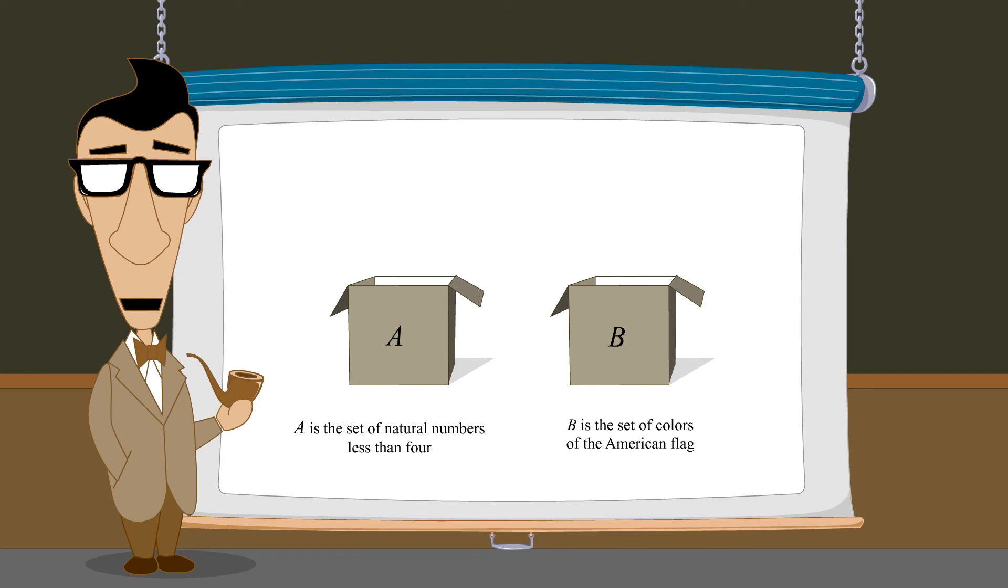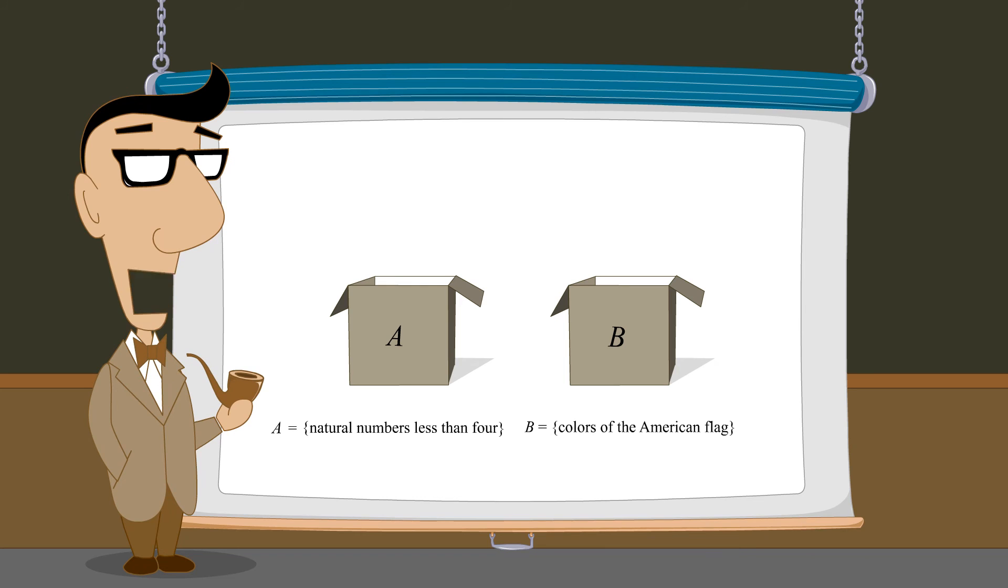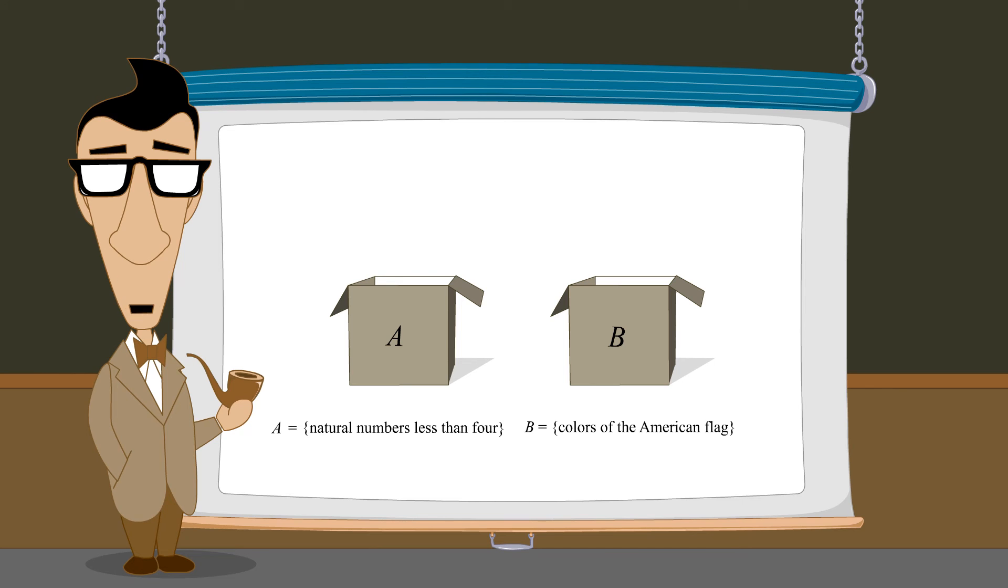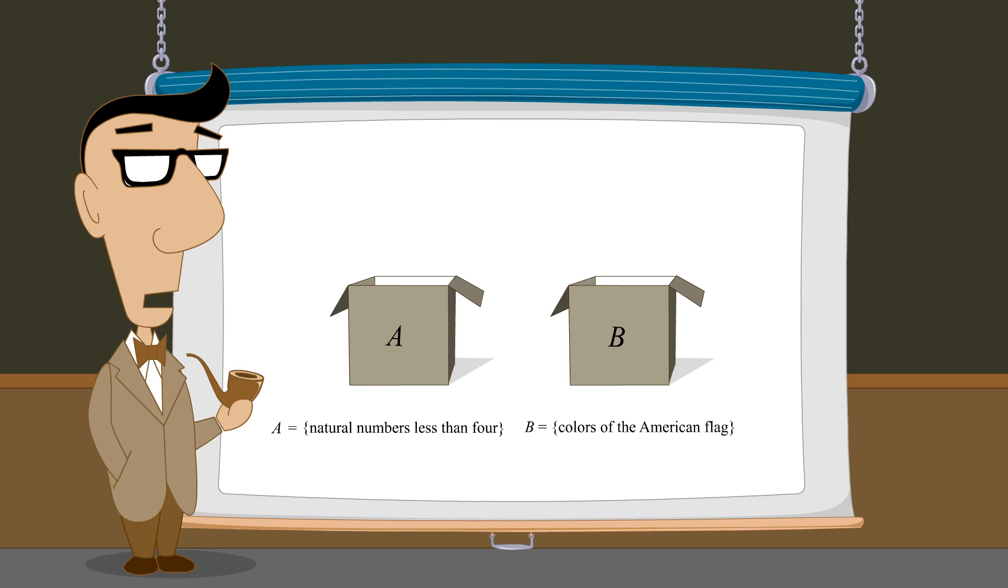Another option is to enclose the description in curly brackets. The brackets are read as the set of all. For example, A is the set of all natural numbers less than 4. There is also a more rigorous mathematical notation for describing a set, called set builder notation.